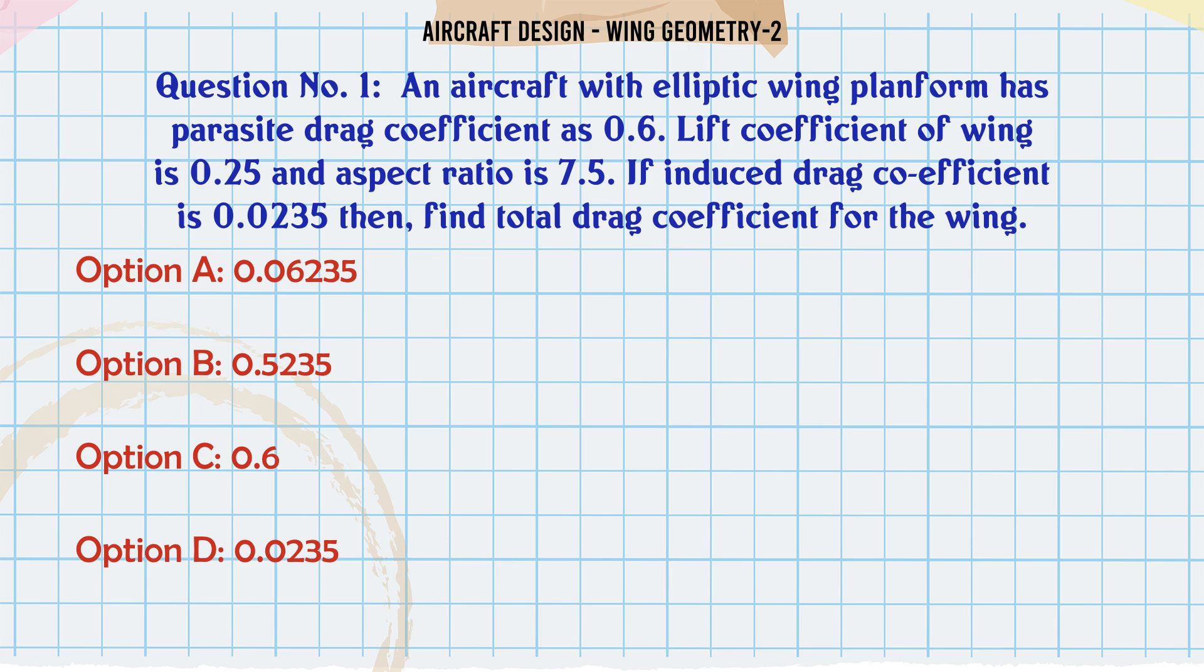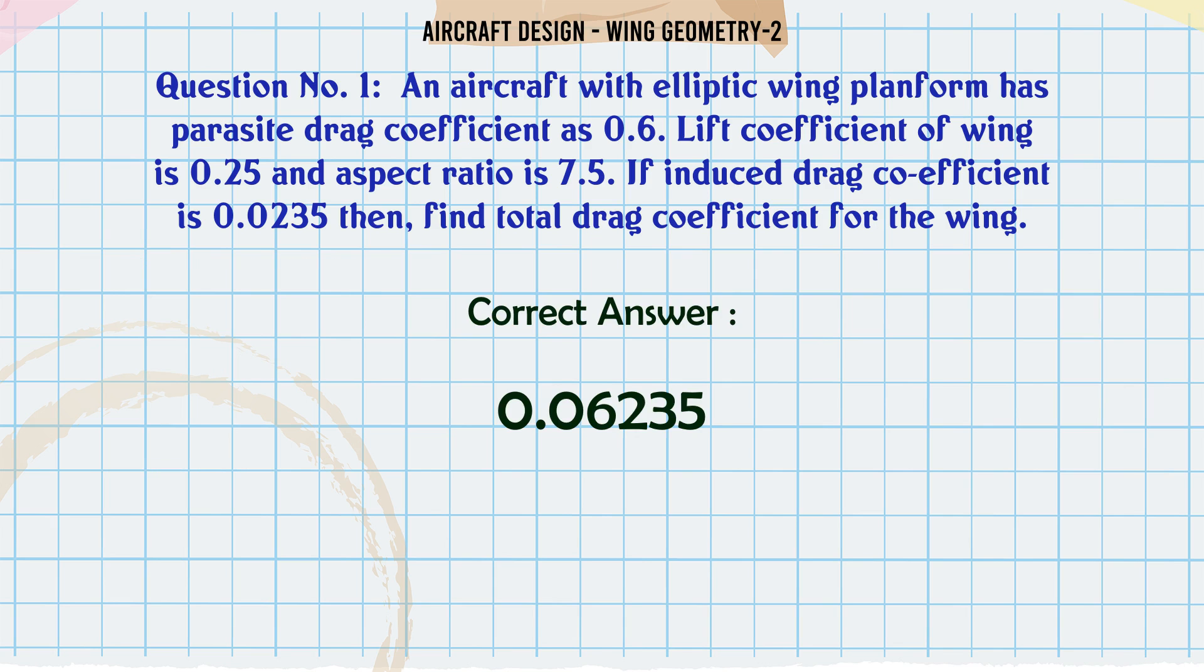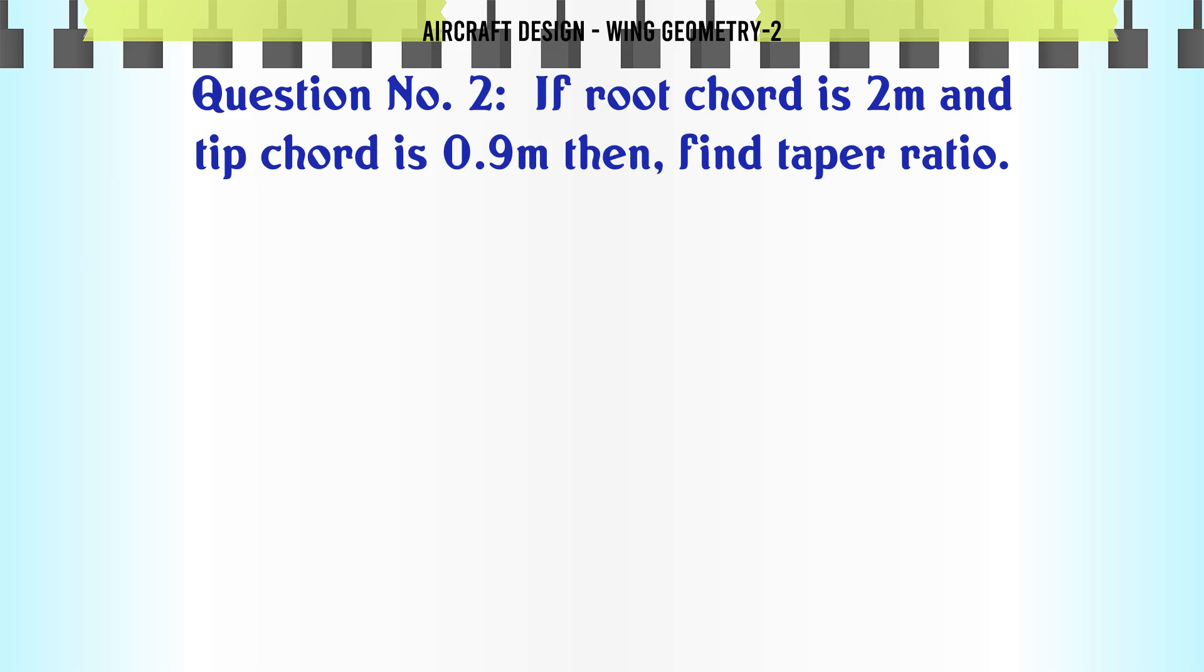A: 0.06235, B: 0.5235, C: 0.6, D: 0.0235. The correct answer is 0.06235. If root chord is 2m and tip chord is 0.9m, then find taper ratio.